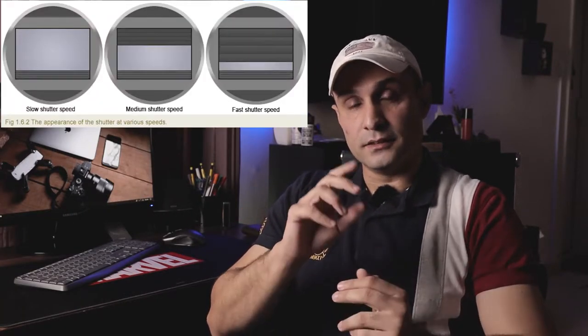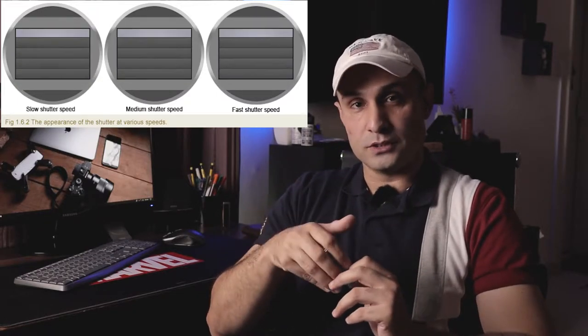Inside your camera, in front of your sensor, there is a small flap that opens and closes — that is known as a shutter. It allows a fixed amount of light to enter and hit the sensor. Shutter speed defines the time for which that shutter opens and closes — the time window for which it is open. Shutter speeds are measured in fractions of a second and can range from anywhere between 30 seconds to 1/4000th of a second.